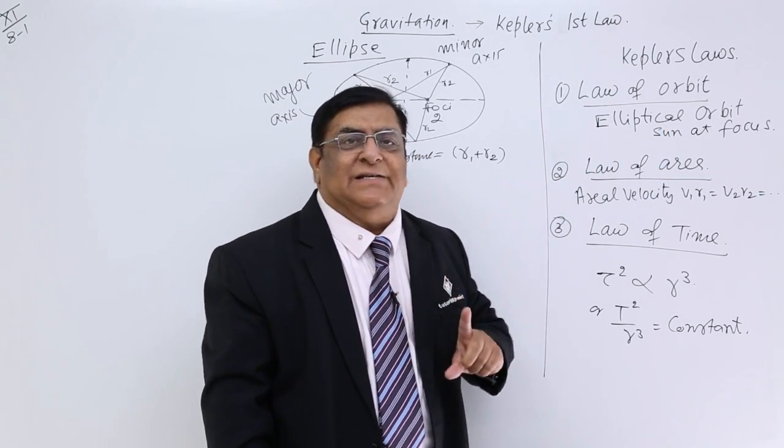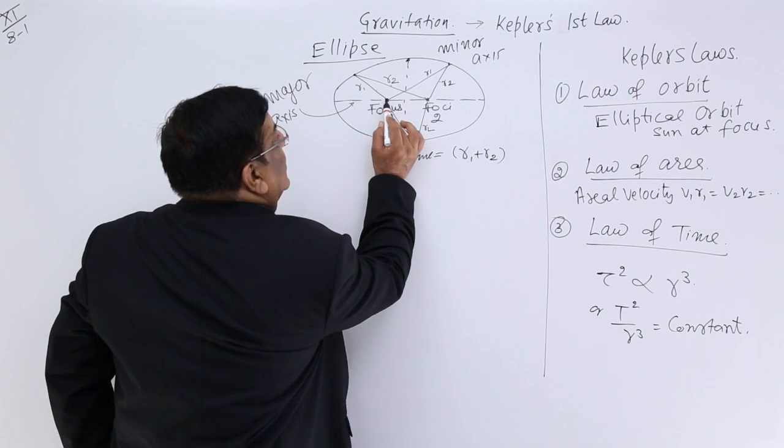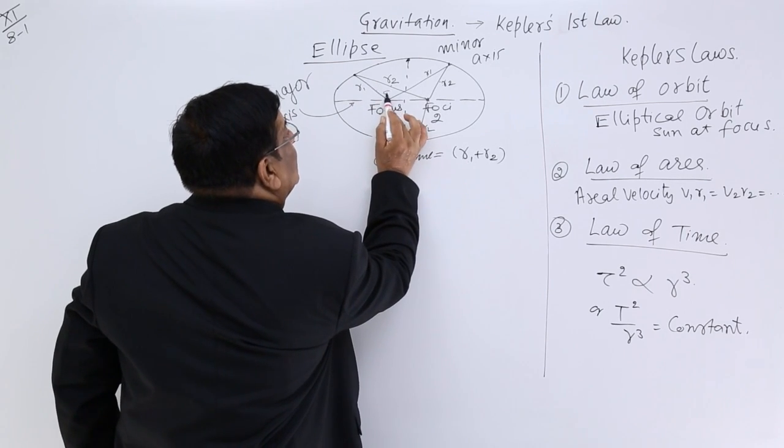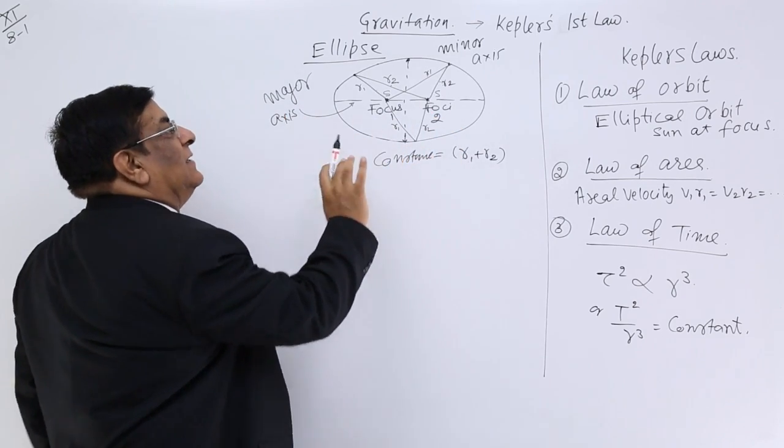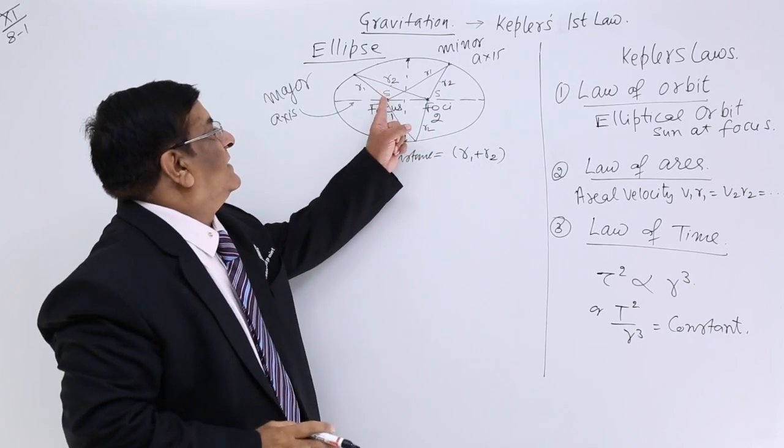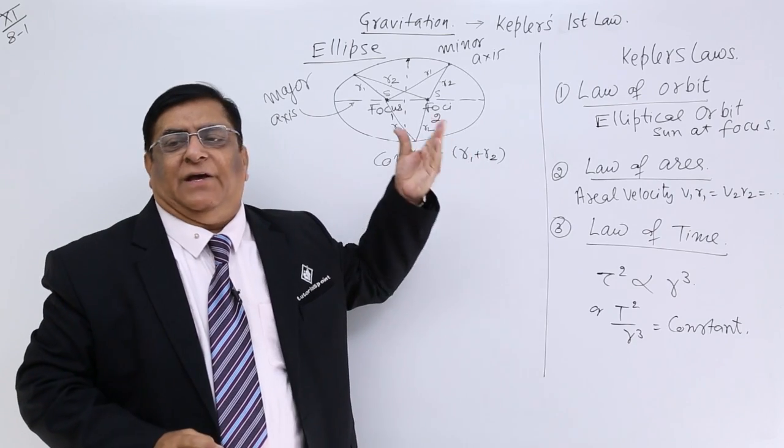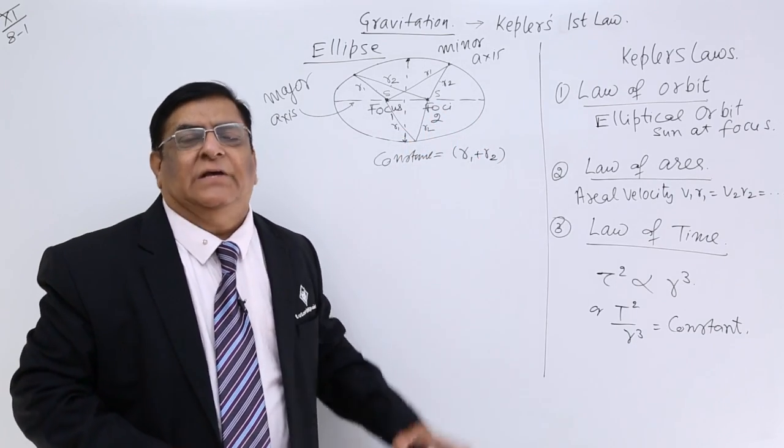Where? The sun is at either of its focus. The sun may be here or the sun may be here. Not necessary, he did not make any rule whether the sun will be here or here. He said it may be anywhere, this is symmetrical.